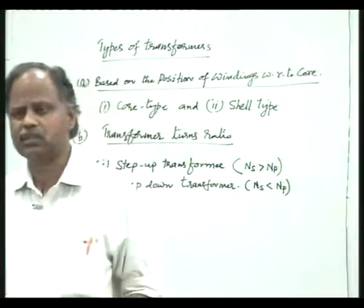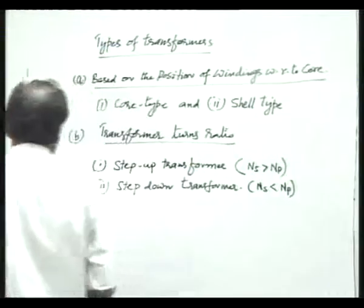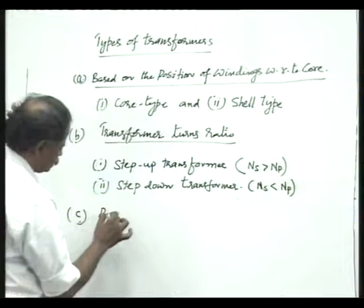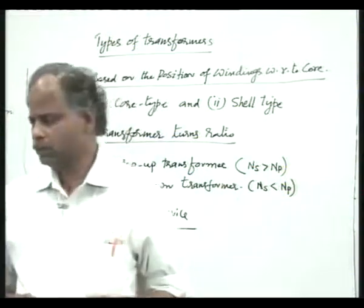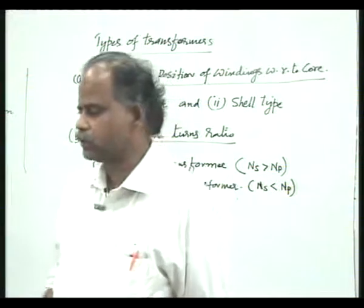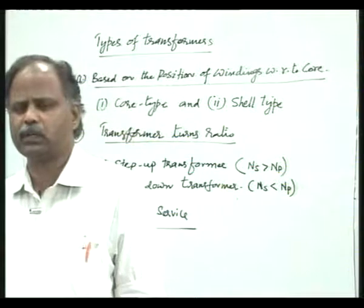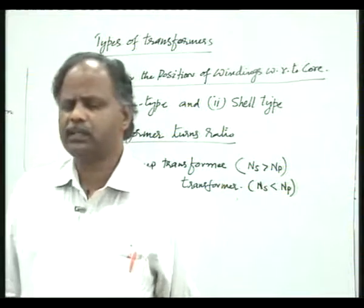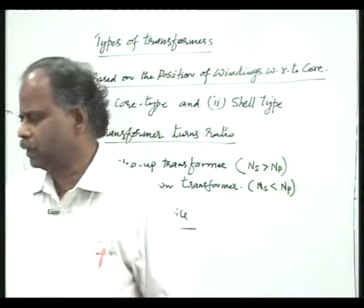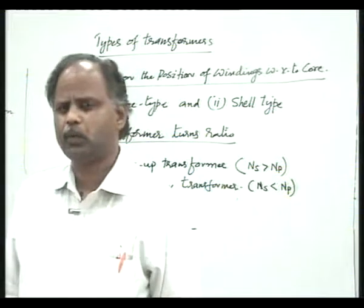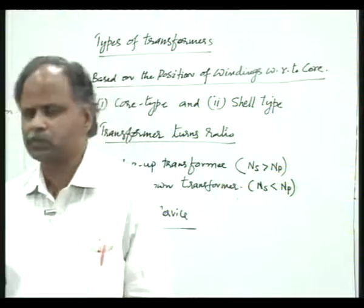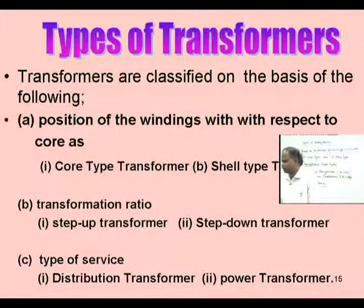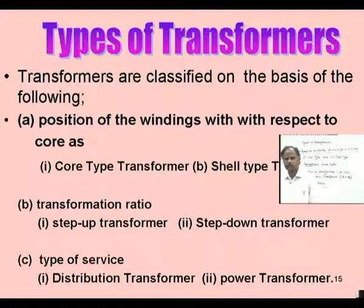Based on the turns ratio, the third criterion for classification is the type of service for which the transformer is intended. Based on the type of service, we classify transformers into distribution transformers and power transformers. Distribution transformers are used for distributing voltage, for example from 33 kV to 11 kV. Power transformers are used for transferring voltage from high to low or low to high value according to requirement.